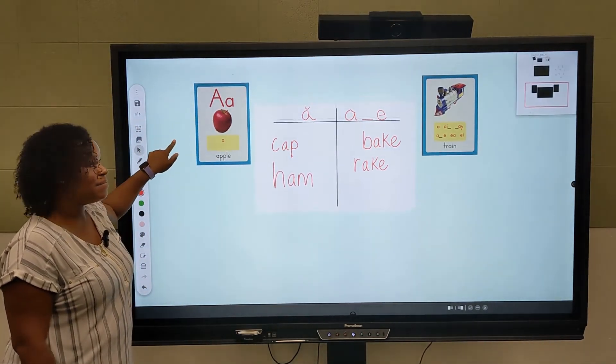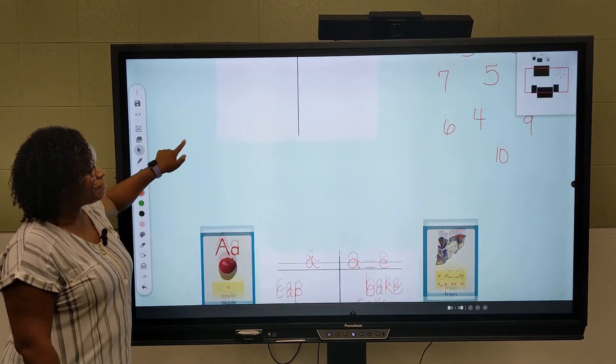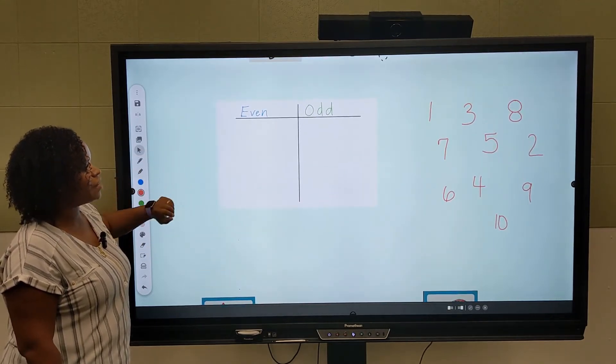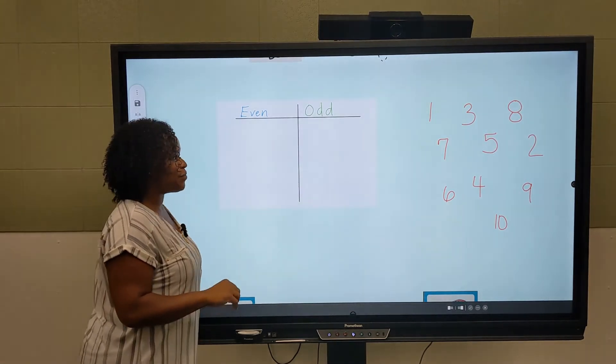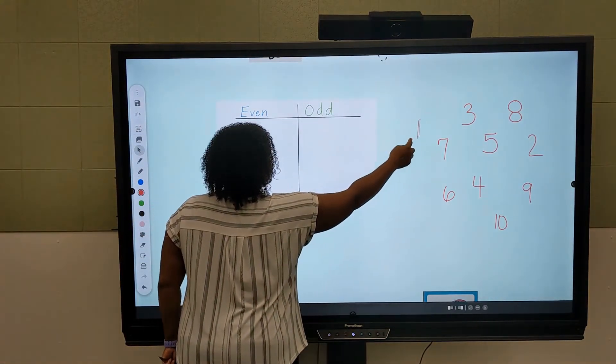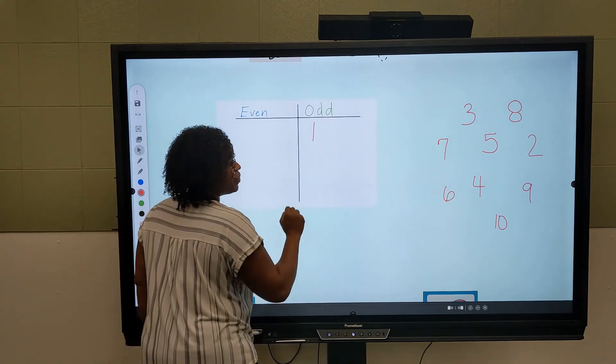Let's look at math. If I wanted to categorize even and odd because I drew these in advance, waited three seconds, I can now take the number and move it in the correct category.